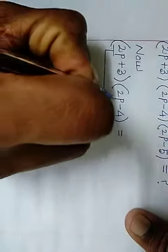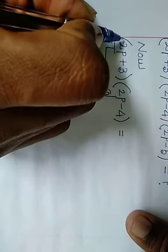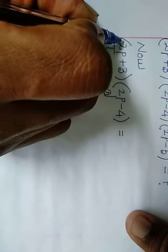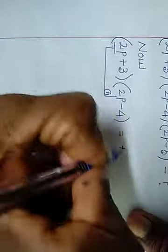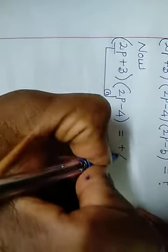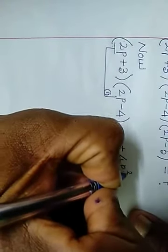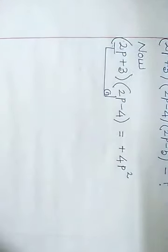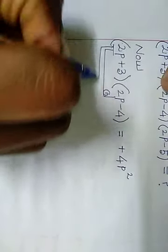This is the 1st step. Multiply and find the answer. The 1st sign is plus. Plus into plus gives plus. 2 times 2 is 4. P into P is P square. That is the 1st step.